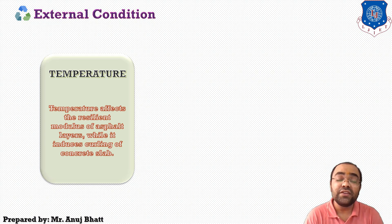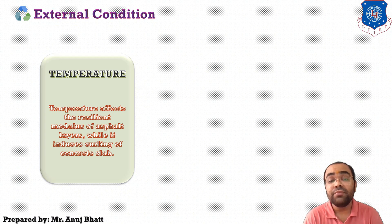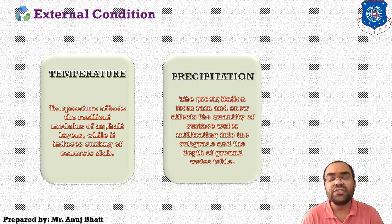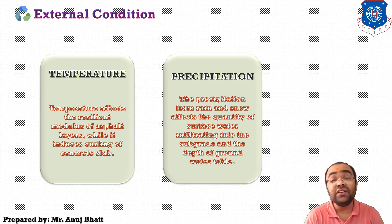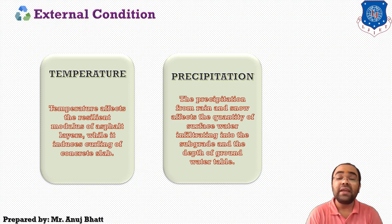Frost heave causes differential settlement and roughness in the pavement. The most detrimental effect of frost occurs during the spring breakup period, when ice melts and the subgrade is in a saturated condition. Precipitation from rain and snow affects the quantity of surface water infiltrating into the subgrade and the depth of the groundwater table. Poor drainage may result in lack of shear strength, pumping, and loss of support to the pavement.